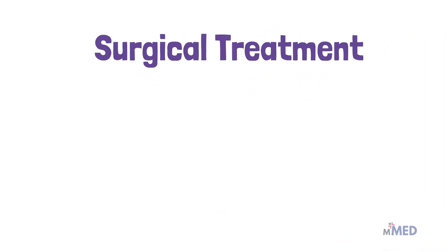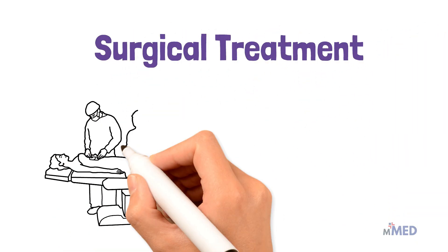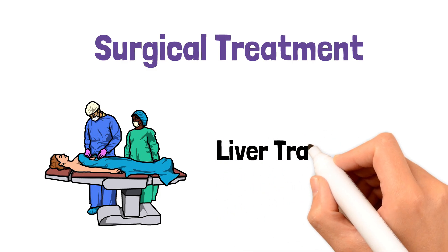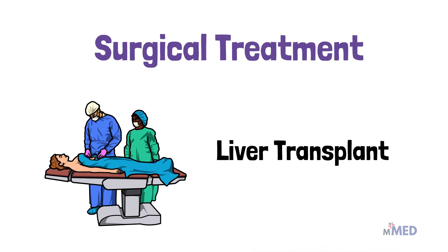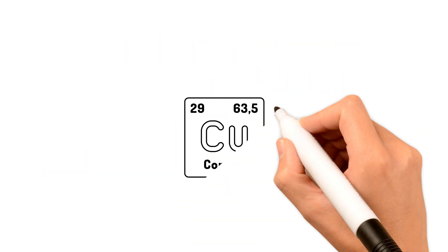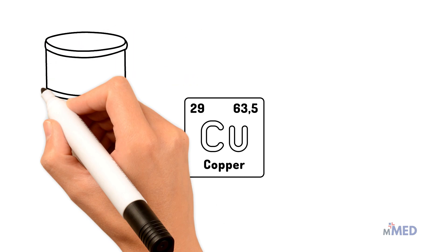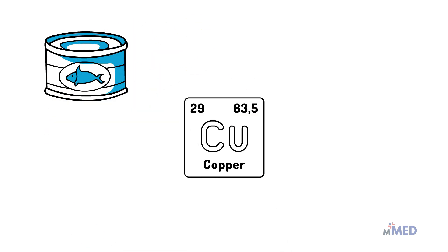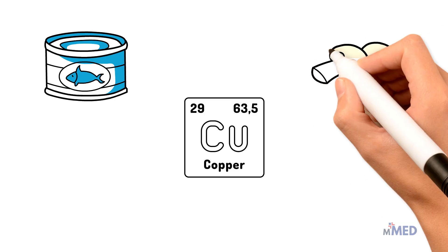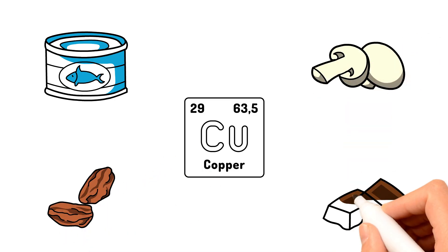In terms of surgical treatment, if the liver damage is severe, a liver transplant should be considered. If you have Wilson's disease, your doctor will likely recommend that you limit the amount of copper you consume in your diet. Foods that contain high amounts of copper include liver, shellfish, mushrooms, nuts, and chocolate.